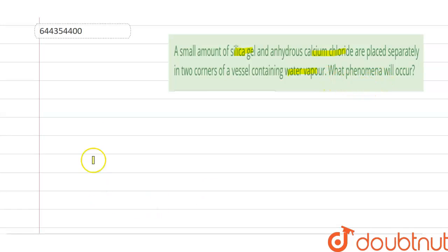Now let us understand the answer for this question. Let us take this as the vessel. In one corner, there is silica gel - a small amount of silica gel is kept. In another corner, anhydrous calcium chloride is kept.